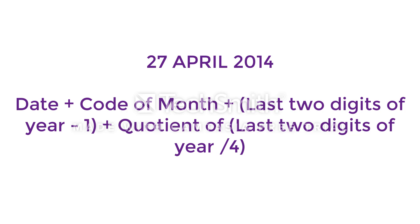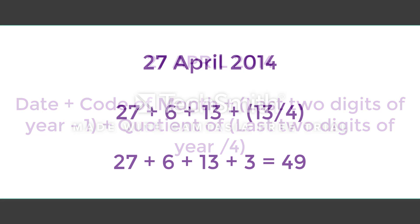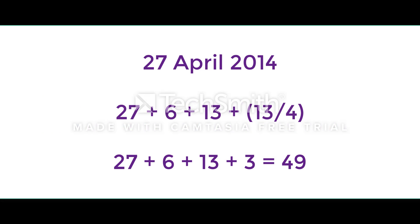Now let's find the day on 27th April 2014. What you have to do is take the date, add the code of the month, add the last two digits of the year and subtract 1 from it. So the last two digits of the year is 14, subtract 1 — it becomes 13. Then take the quotient of 13 divided by 4, which gives you 3 (ignore the decimal part).